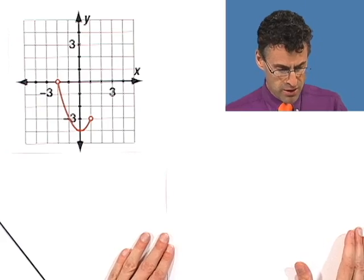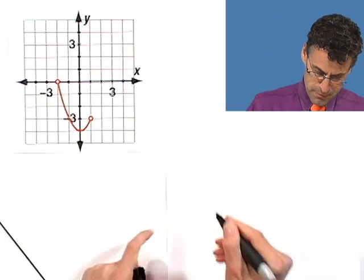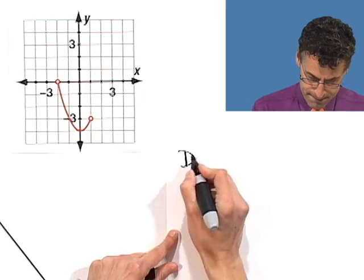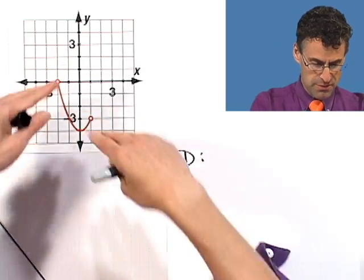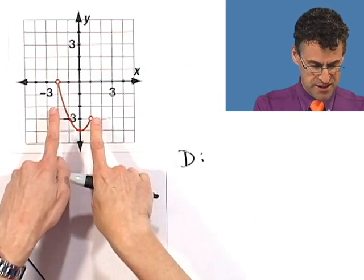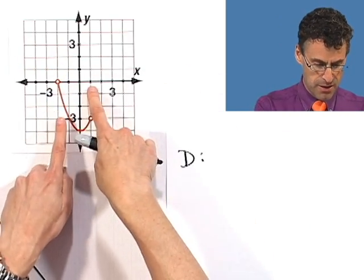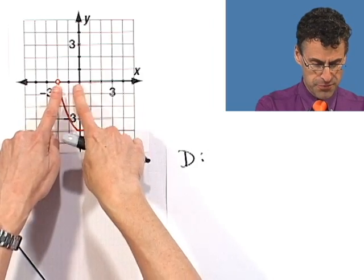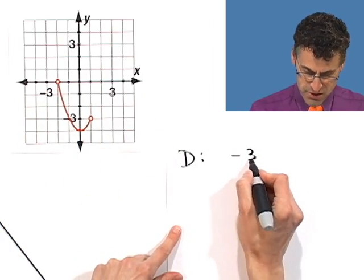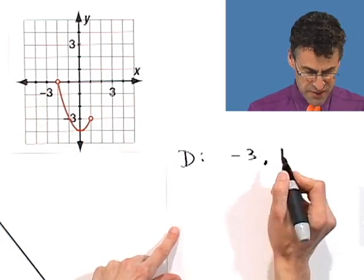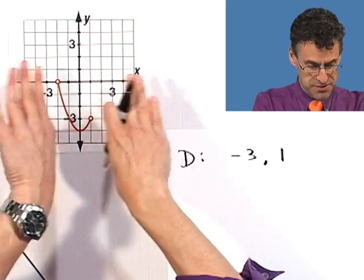Here's a crazy one — crazy functions! What's the domain? If you squash everything to the x-axis, what do you see? You see everything from negative 2 to 1, and nothing else anywhere else.